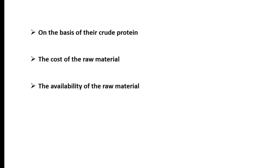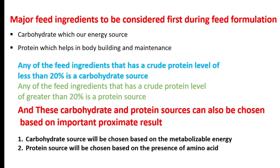The next basis for selecting feed ingredients is the availability of the raw materials, which depends on the location of the farmer. Anytime you want to formulate your own feed, always consider the availability of raw materials in your area. Some materials may be available in some areas and not in others, so you must consider which raw materials are present in your location. Traveling a far distance to get ingredients will add to your cost.